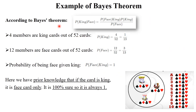According to the Bayes' theorem formula: probability of king given face equals probability of face given king, times probability of king, divided by probability of face. We need to calculate each of these. First, probability of king: there are 4 king cards out of 52, so 4/52 equals 1/13. Next, probability of face card: 12 face cards out of 52, so 12/52 equals 3/13.